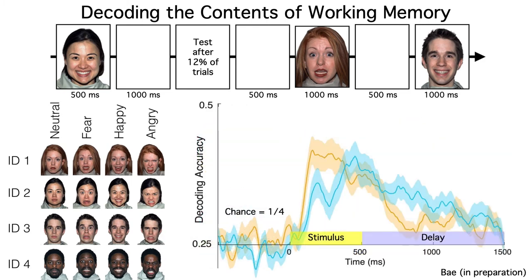As a result, decoding accuracy was well above chance for both identity and expression. Moreover, the decoding was done separately at each time point so that Giel could determine what information was present in the signal at each moment in time, first during the stimulus and then during the delay period.